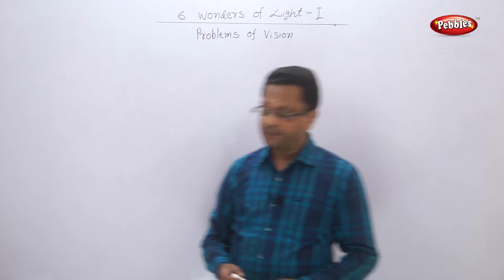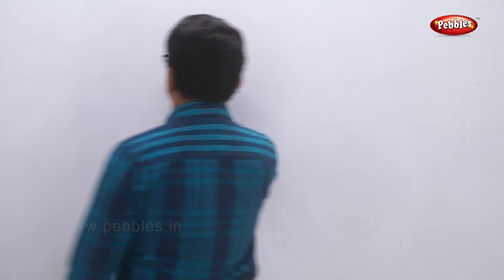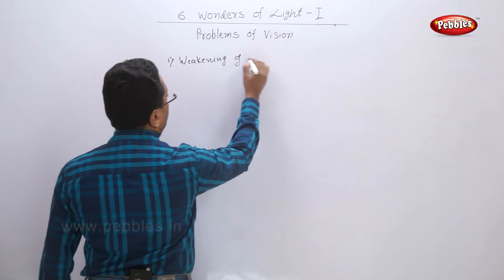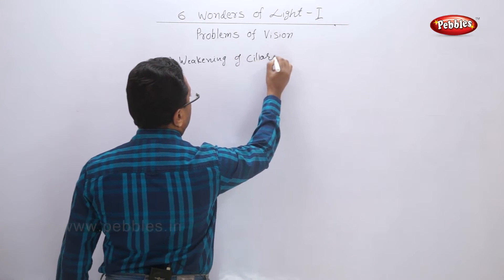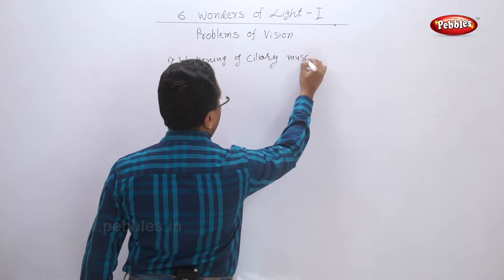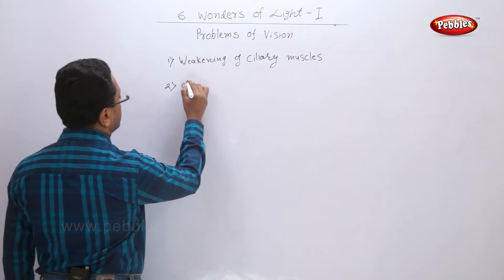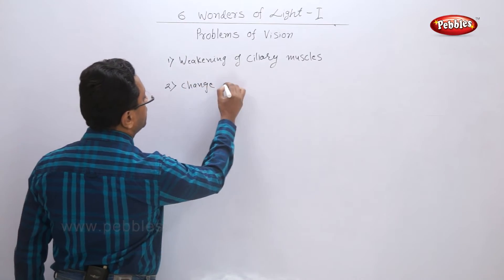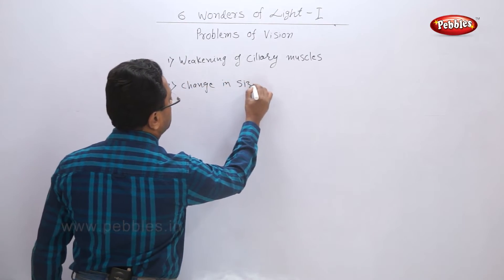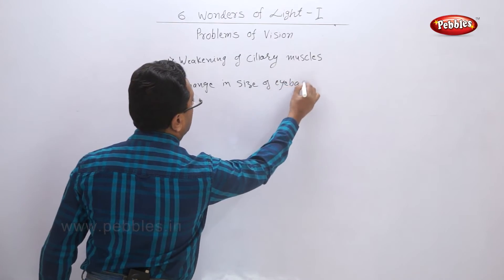The problems of vision are related to various reasons. First, weakening of ciliary muscles. Second, change in size of eyeball.